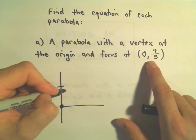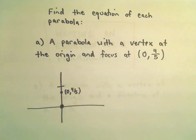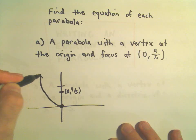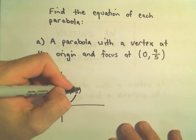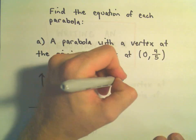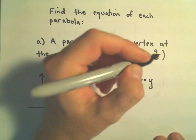So I'm going to label that zero four-fifths. It's definitely not a point on our graph, but I'm just going to label it there just to remind us. So I know that the parabola would have to be opening upwards in this case. So to me that tells me that it has an equation of the form x squared equals 4p times y.